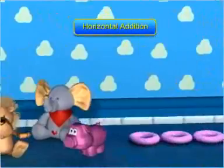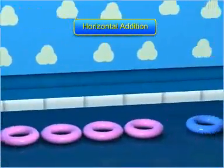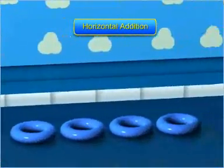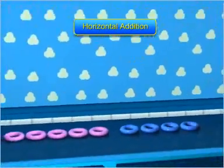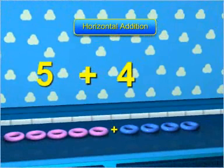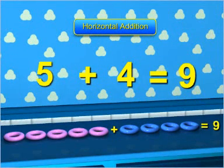In horizontal addition, the numbers to be added are placed side by side, that is horizontally. We use a plus sign between the numbers that are added and an equal to sign before the answer.